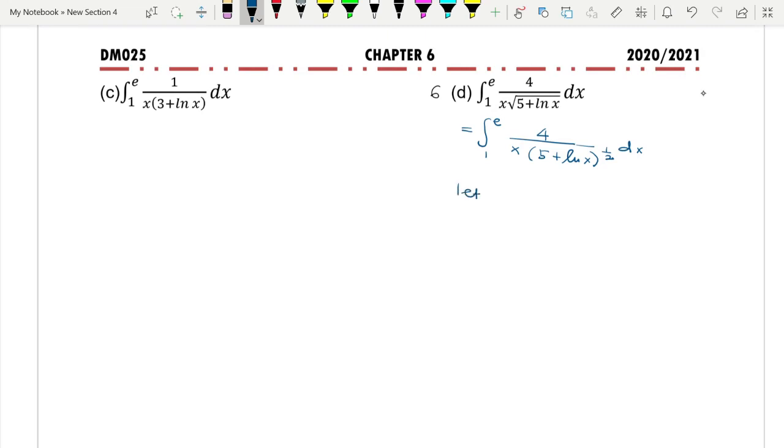For substitution method, select u. Previously, u may come from the denominator, the log, inside the bracket but without the power, or the power. If you use the denominator, you need to use the product rule.